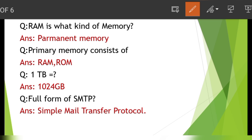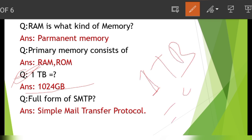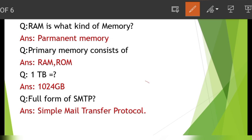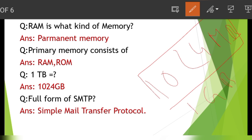Next question — this is very important. 1TB is equal to 1024GB. Also, 1GB is equal to 1024MB. 1TB equals 1024GB is an important fact to remember.